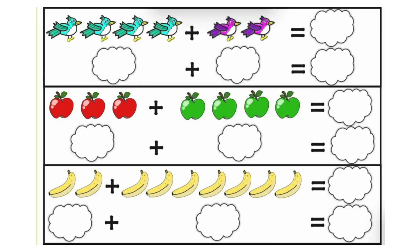How many birds are there? 1, 2, 3, 4. So here 4 birds are there. Now right side 1 and 2. So how many birds are there? 2.